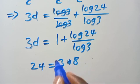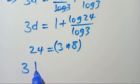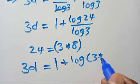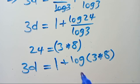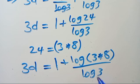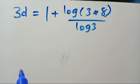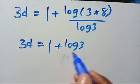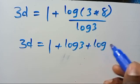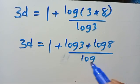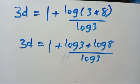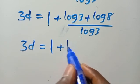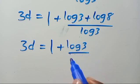So from here we have 3D equals 1 plus log 24 divided by log 3. We can write 24 as the product of 3 times 8, so we have 3D equals 1 plus log of 3 times 8 divided by log 3, which gives 3D equals 1 plus log 3 plus log 8, all divided by log 3.